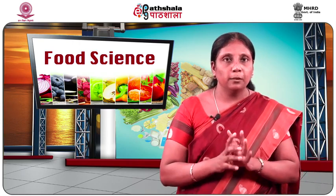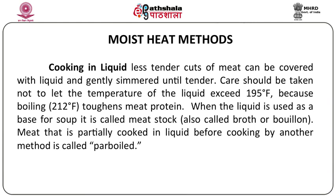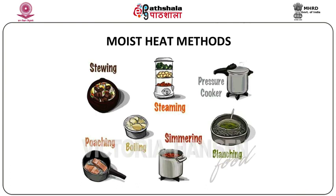Moist heat methods involve cooking meat in a liquid. The less tender cuts can be covered with liquid and gently simmered until the meat becomes tender. Care should be taken not to let the temperature of the liquid exceed the boiling point, as this will toughen the proteins of the meat and make it unpalatable. When the liquid is used as a base for a soup, it is called a stock, also referred to as a broth or bouillon. Meat that is partially cooked in liquid before cooking by another method is called par-boiled meat. The moist heat methods include stewing, steaming, pressure cooking, poaching, boiling, simmering, and blanching.